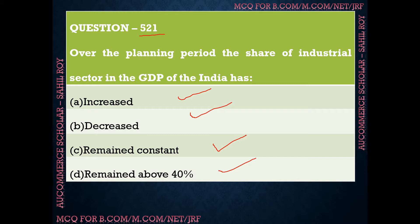Over the planning period, India's first industrial policy was in 1948, and since then India's industrial sector's share in GDP has increased and continues to increase. New factories and industries are being set up in the country, and the country will develop. So over the planning period, the share of the industrial sector in the GDP of India has increased — the first option is the correct answer.